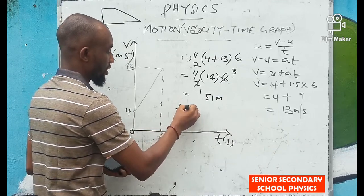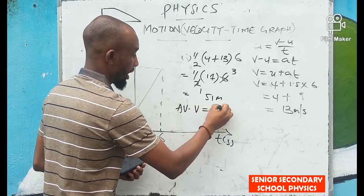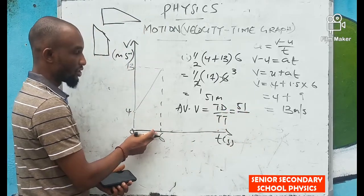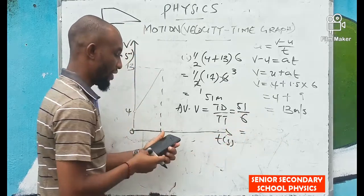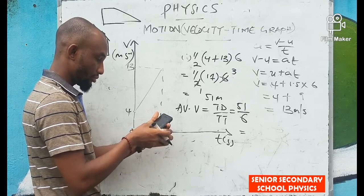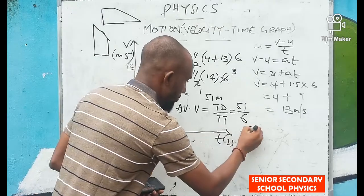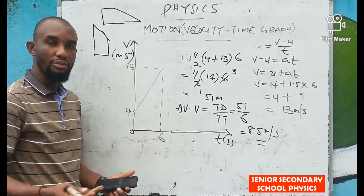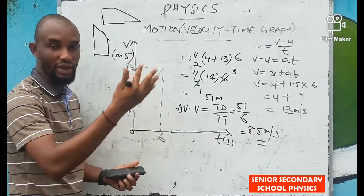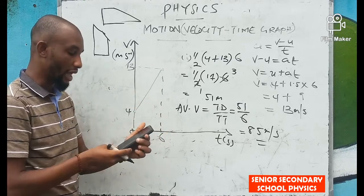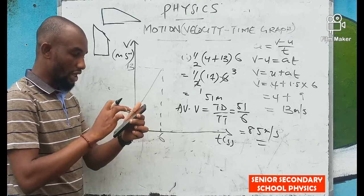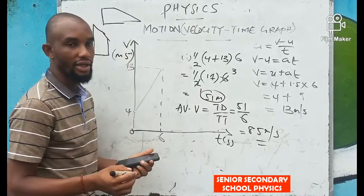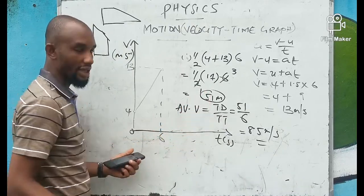Average velocity = total distance / total time = 51 / 6 = 8.5 meters per second. That is the average velocity. And the distance moved in the 6 seconds, which we have already obtained from the area of the trapezium, is 51 meters.